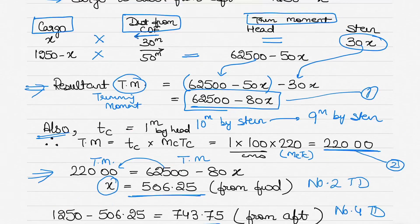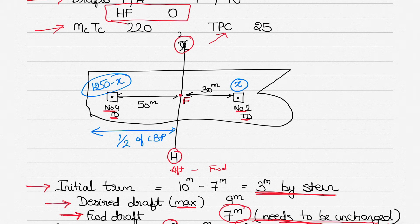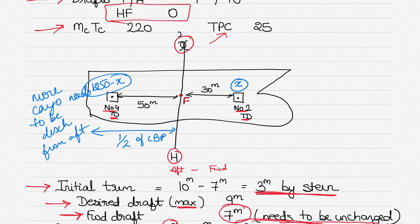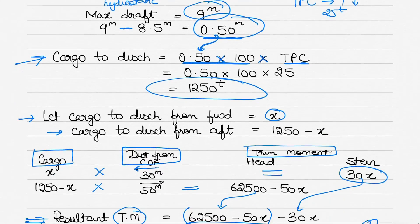As a cross-check: if you had reversed x and (1,250 − x) — assigning x to aft and (1,250 − x) to forward — you would notice something is wrong because more cargo must always be discharged from aft than from forward. If more cargo were discharged from forward, the stern draft would exceed 10 meters, violating the 9-meter maximum draft limit.